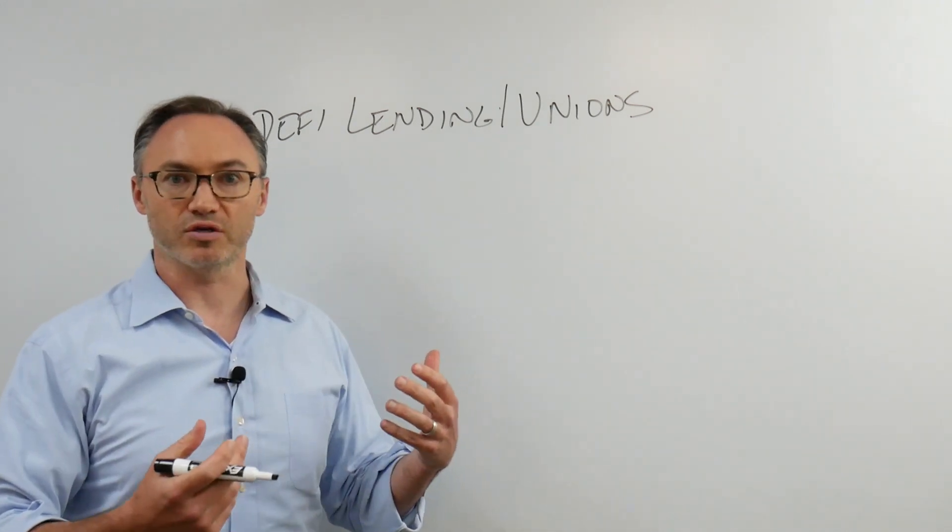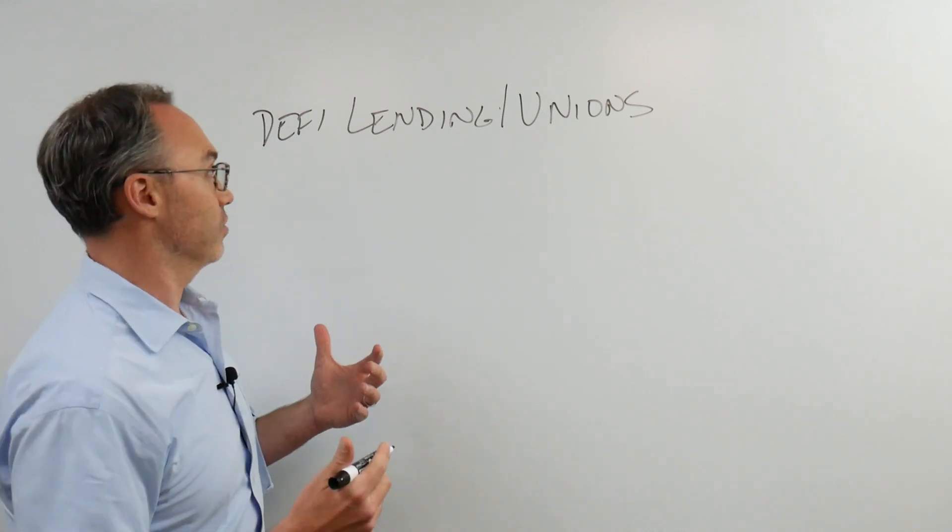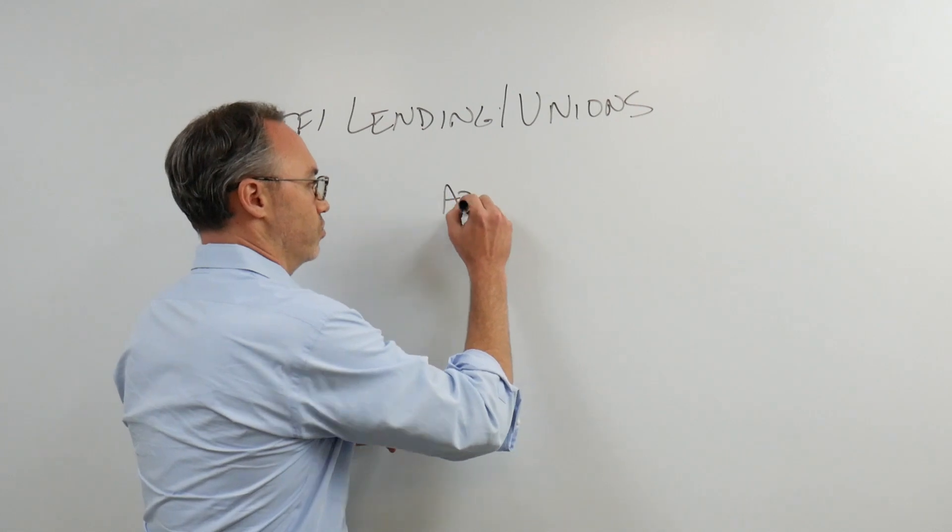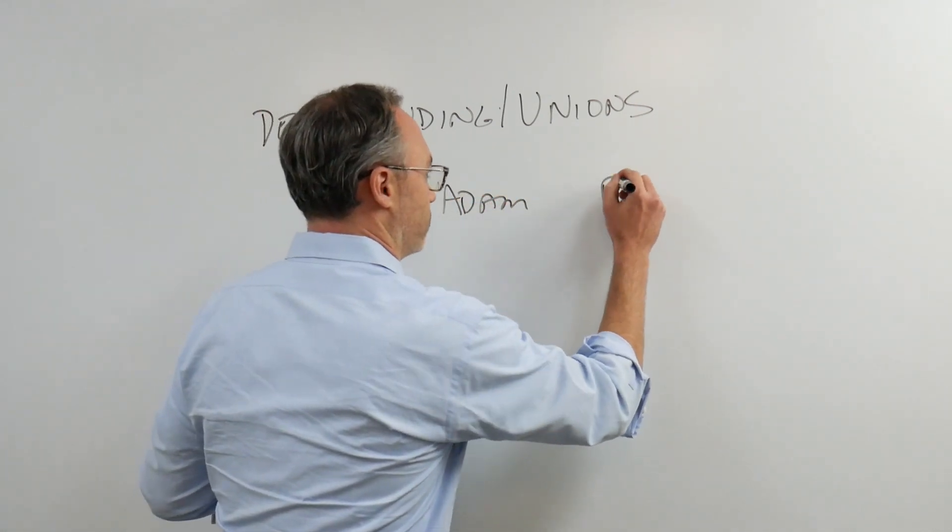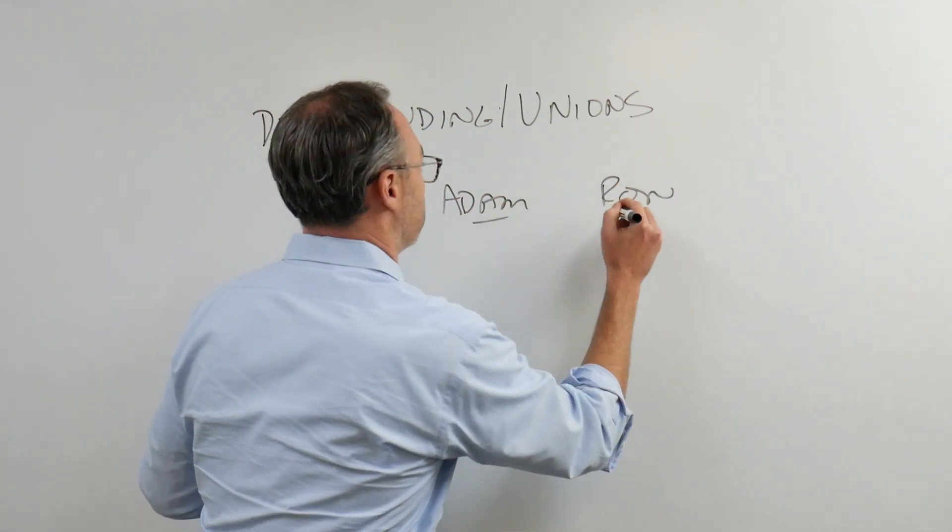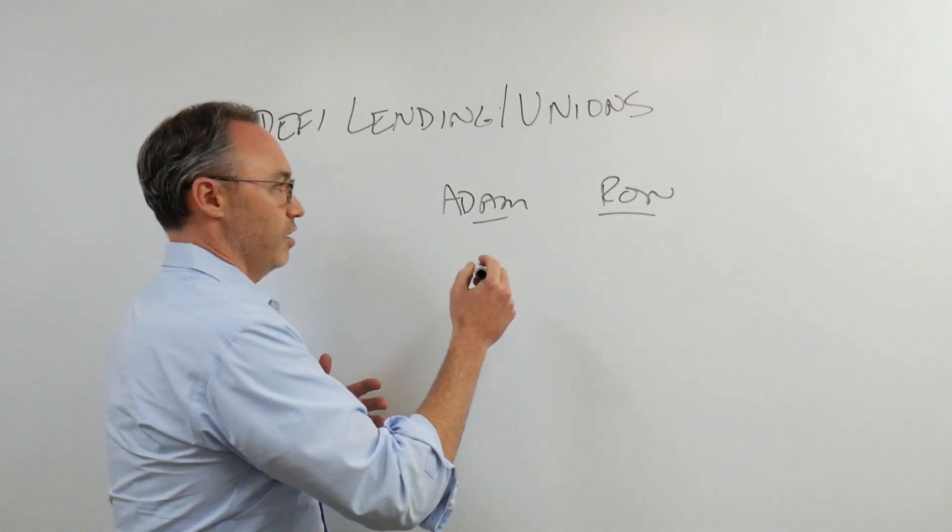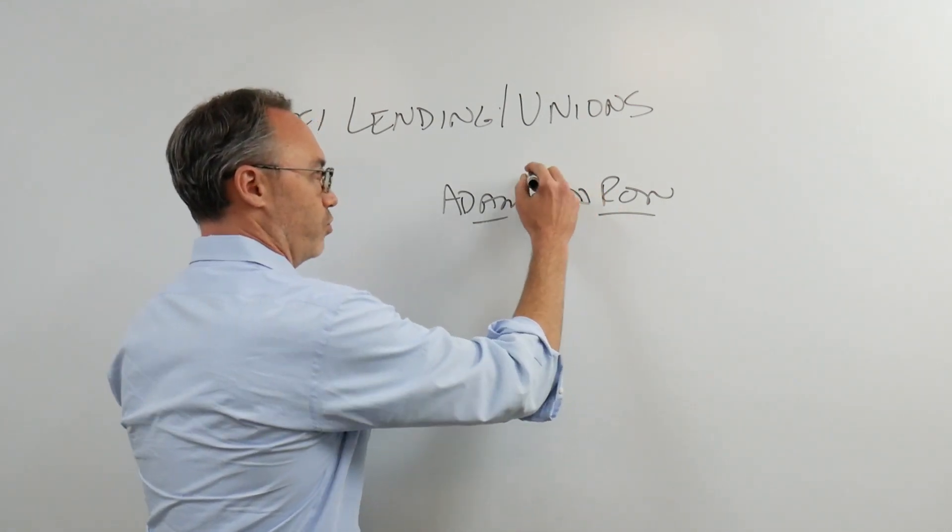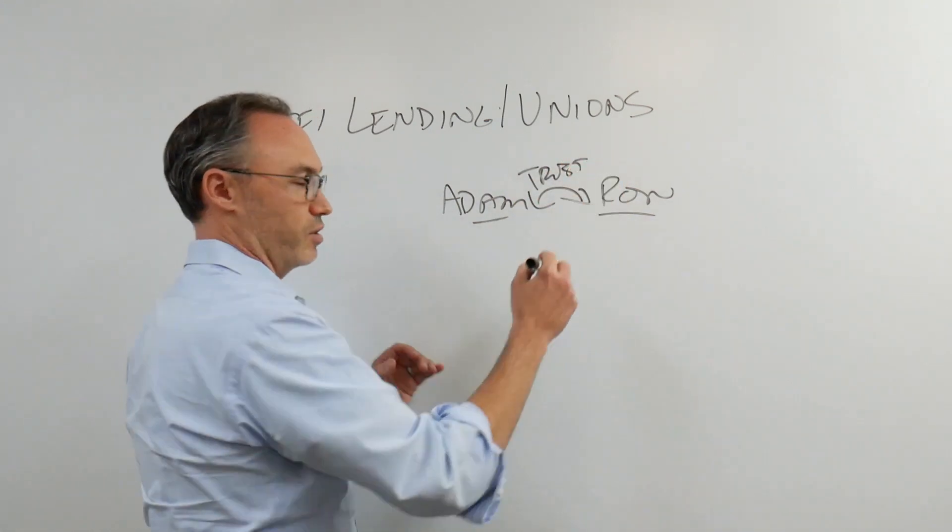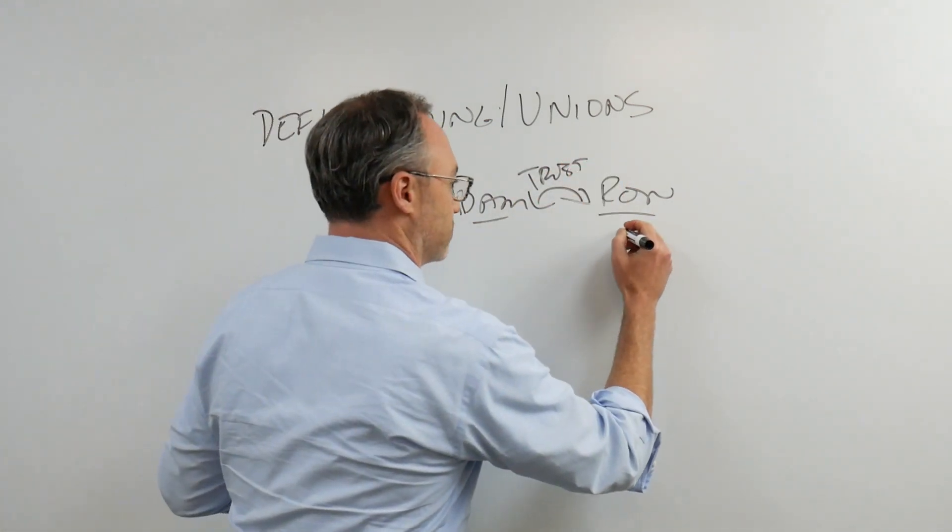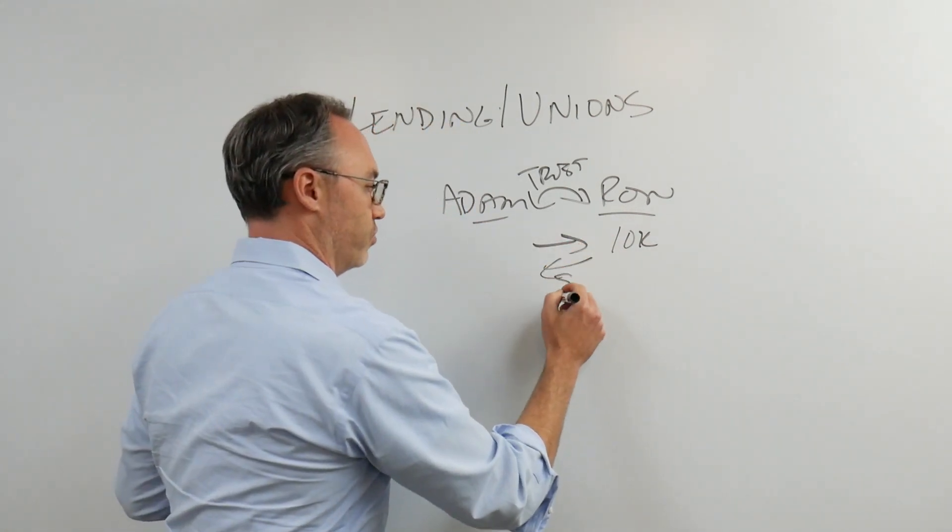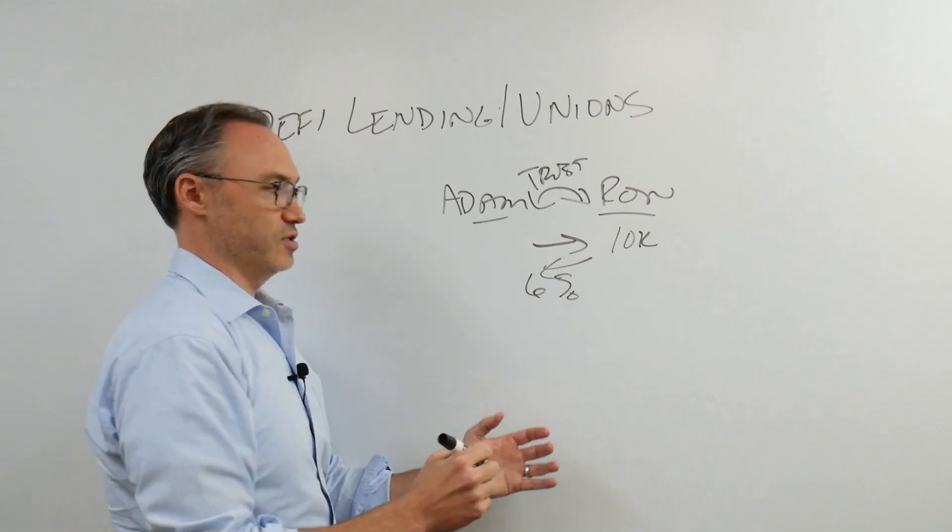And there are some projects that are actually working on this right now. Because part of the problem, of course, is, so we'll go back to my usual example, my usual Adam and Ron example. Okay, and so if I know Ron, right, we have this trust going on here.